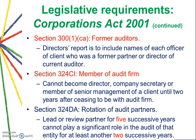Section 300 paragraph 1 relates to former auditors — the director's report must include the names of officers who were formerly a partner or director of the current auditor. Section 324CI requires that a member of an audit firm cannot become a director, company secretary, or member of senior management of a client until two years after ceasing to be with the audit firm — in simple language, there is a two-year gap.